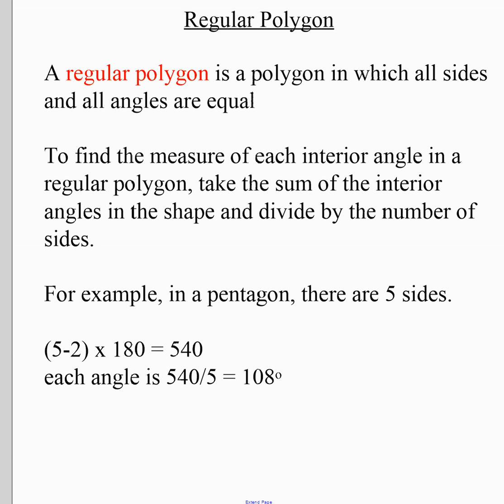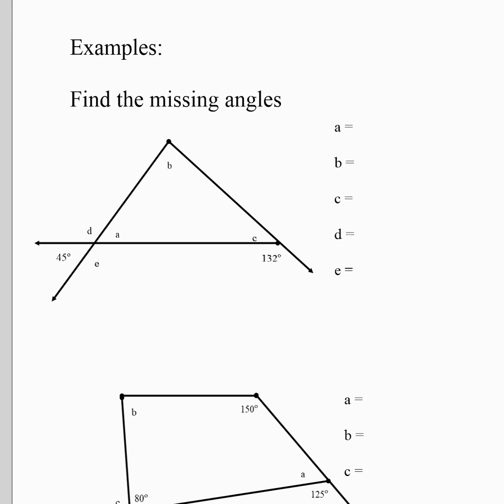Let's look at some examples of why we need to know interior angles — they help us find missing angles in triangles and other shapes. For the first question, we also need to use some geometry we've already learned. Angle A is opposite the 45-degree angle, so because they are vertical angles, A equals 45 degrees.